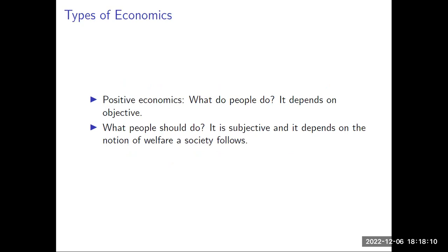There are two ways economics explains things. Economics can be positive economics or normative economics. Positive economics is a branch of economics that tells what people do — it depends on the objectives that people achieve. On the other hand, normative economics tells what people should do. This is about morality. What 'is' is positive economics; what 'ought to be' is normative economics.